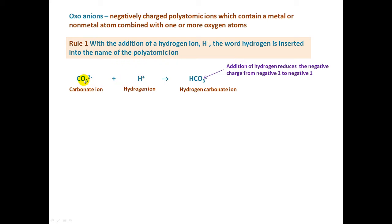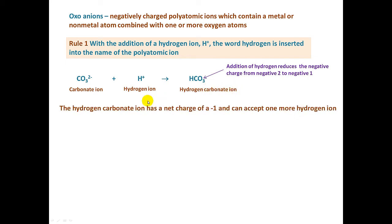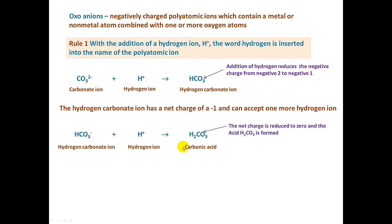Rule number one states: with the addition of a hydrogen ion, the word hydrogen is inserted into the name of the polyatomic ion. When a hydrogen is added to a carbonate ion, we get the hydrogen carbonate ion. The addition of the hydrogen reduces the negative charge from negative-two to negative-one. The hydrogen carbonate ion has a net charge of negative-one, and it can accept one more hydrogen ion. If it accepts another hydrogen ion, the net charge is reduced by one more, giving a charge of zero. Once we have an uncharged species after adding hydrogens, what we have is an acid — carbonic acid.